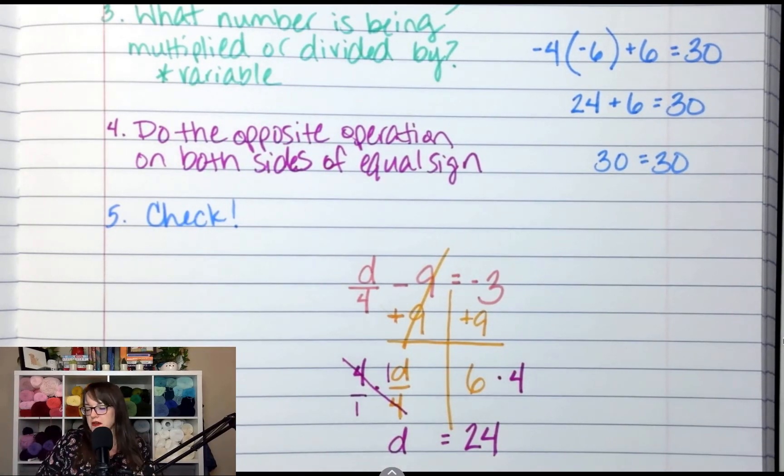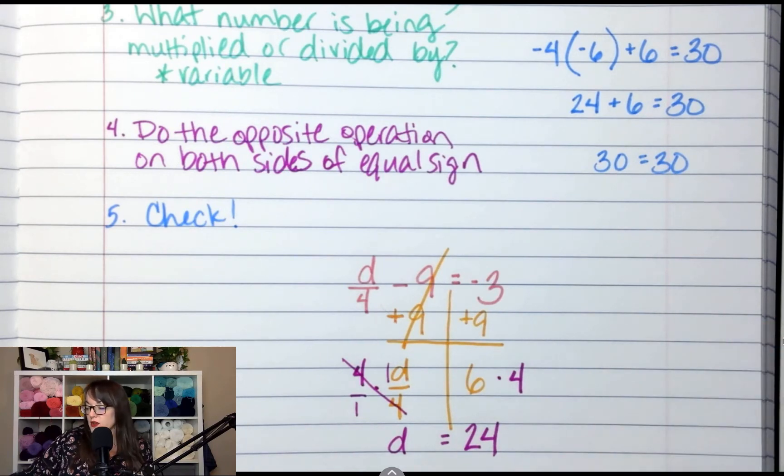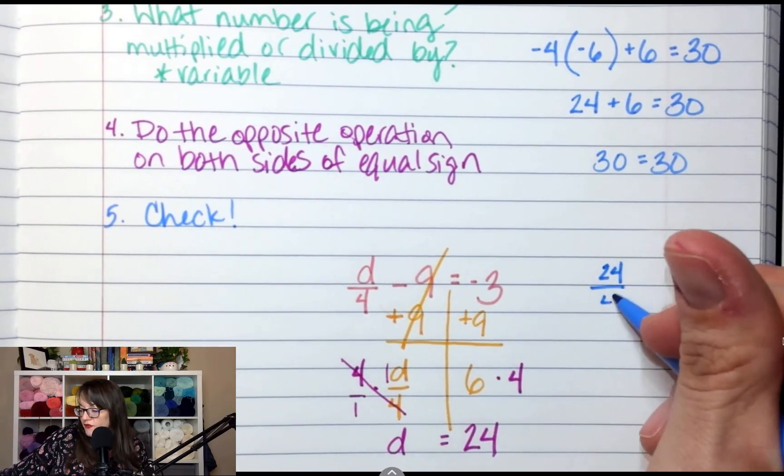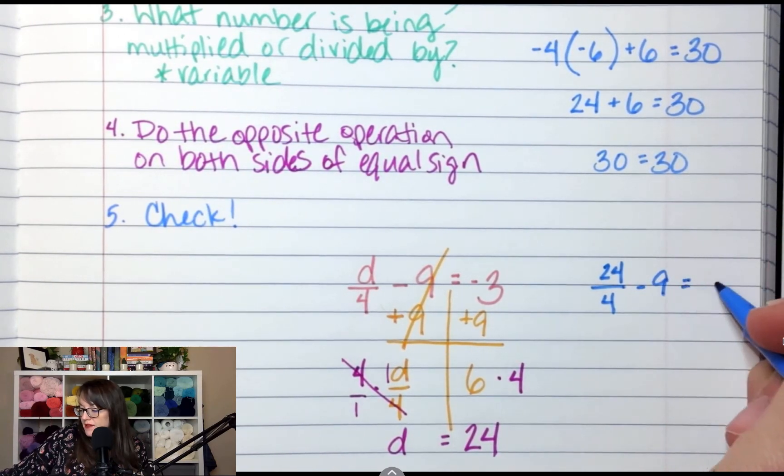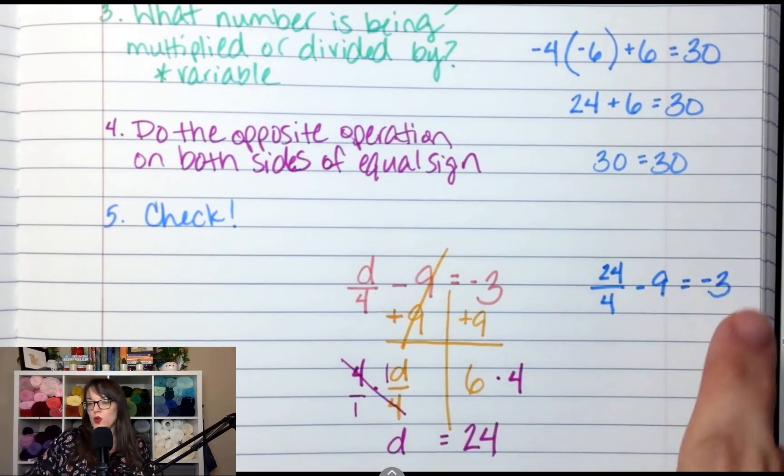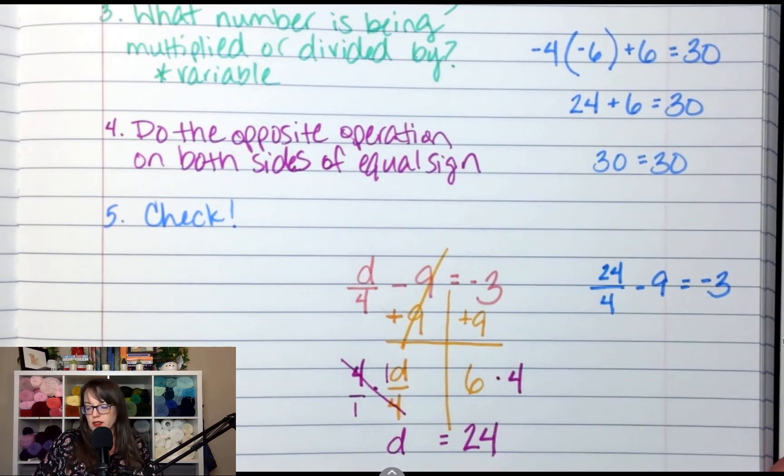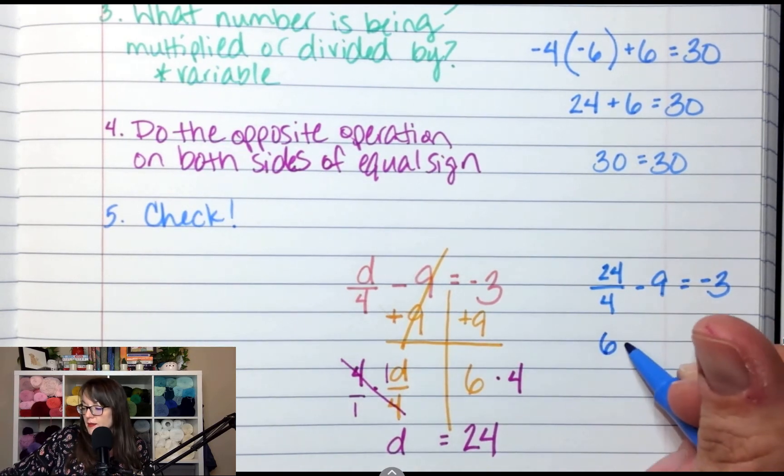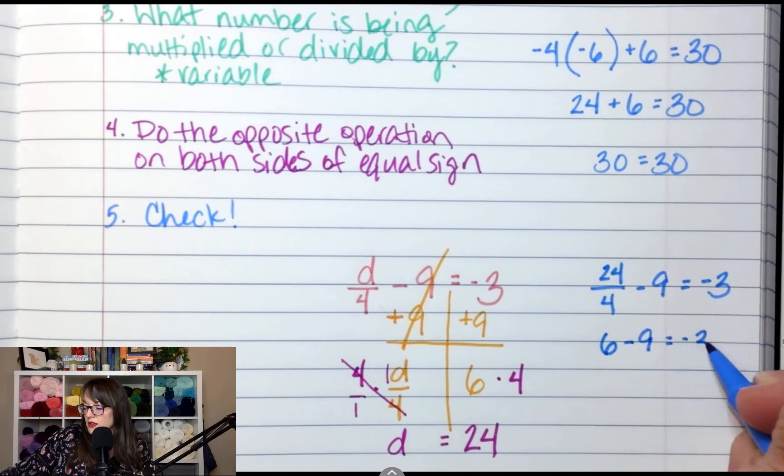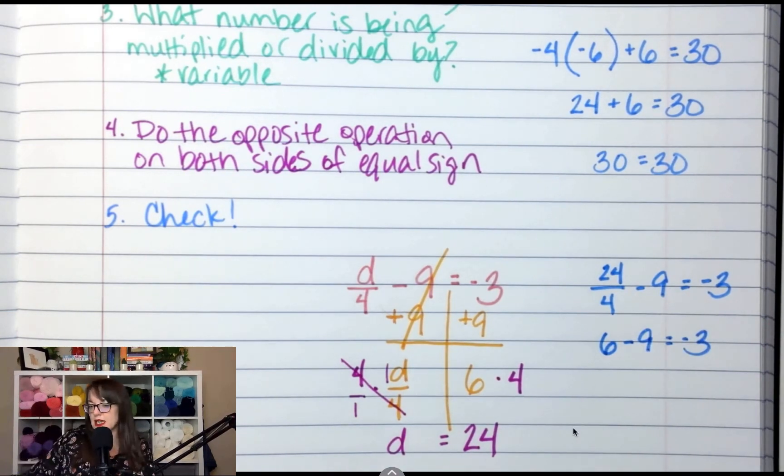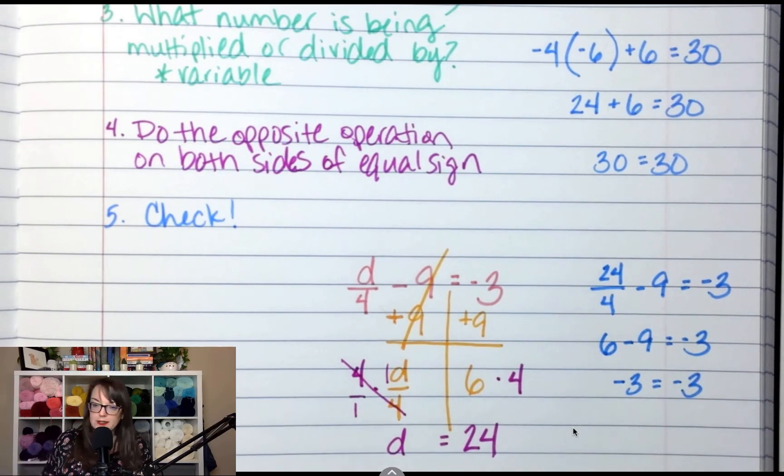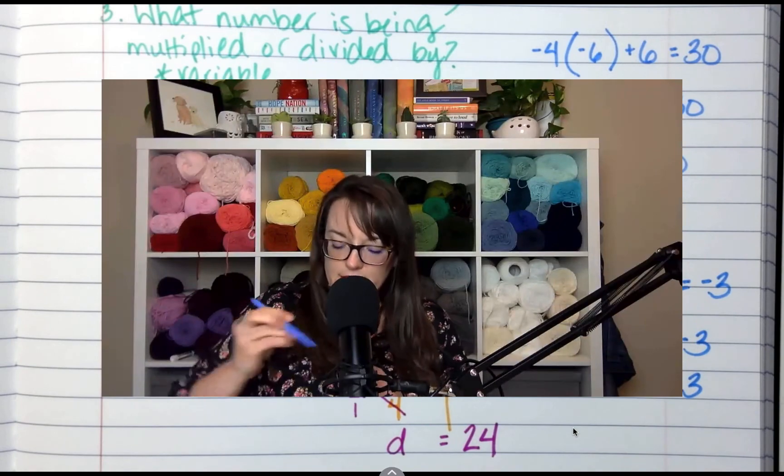What do I have to do next? I need to check my work. So I'm going to put 24 where d is. I've got 24 divided by 4 minus 9. And I'm seeing if that's equal to negative 3. What do I do first in this equation? 24 divided by 4. So 24 divided by 4 is 6, and then minus 9. What is 6 minus 9? Negative 3. And does negative 3 equal negative 3? Yes, it does.